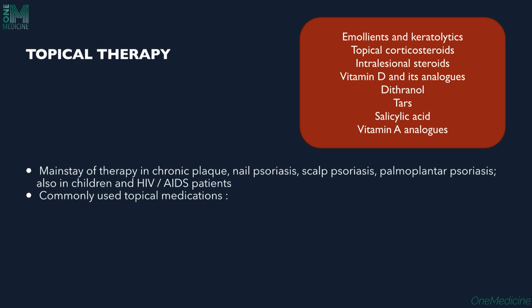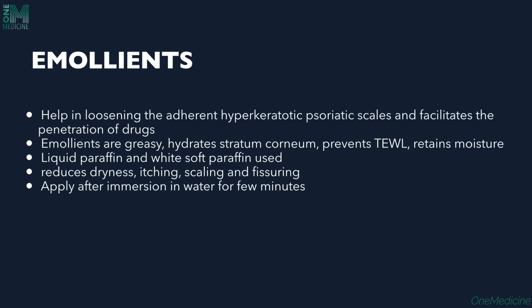Commonly used topical therapies include emollients and keratolytics, topical corticosteroids, intralesional steroids, vitamin D and its analogues, dithranol, coal tar, salicylic acid, and vitamin A analogues. Emollients help in loosening adherent hyperkeratotic psoriatic scales and facilitate better penetration of other drugs. They hydrate the stratum corneum, retain moisture, and minimize dryness, itching, scaling, and fissuring. White soft paraffin and liquid paraffin can be used, applied after water immersion for a few minutes.